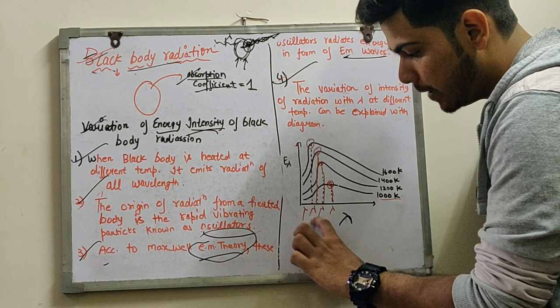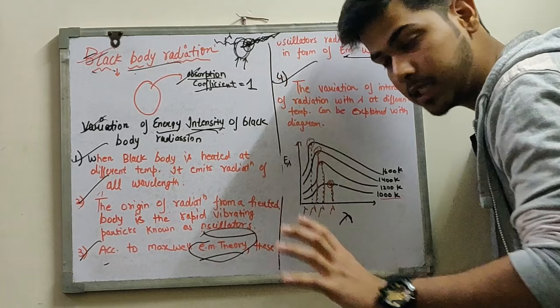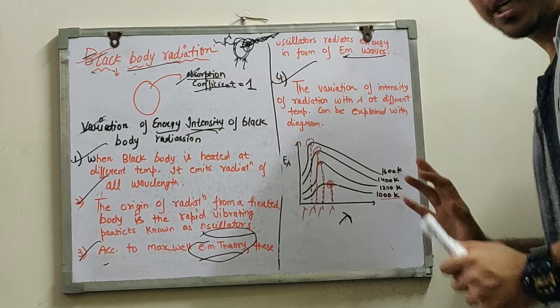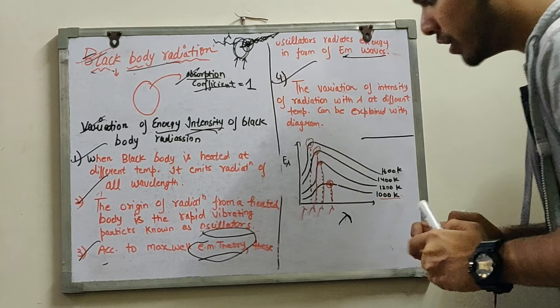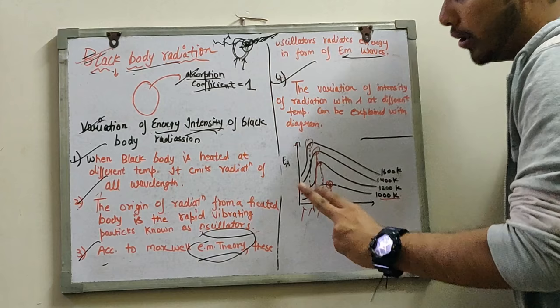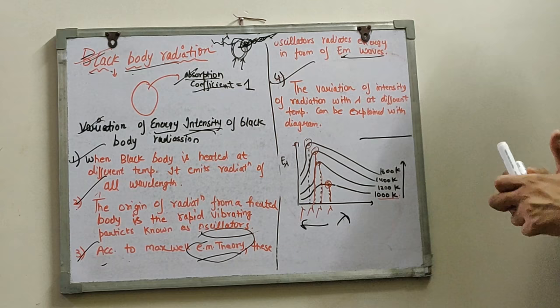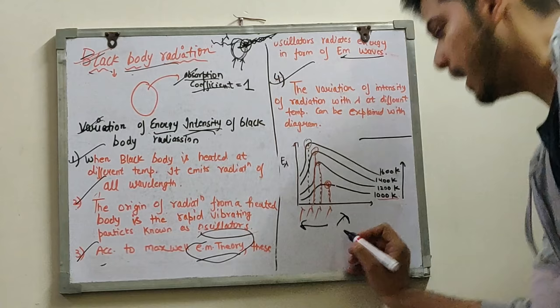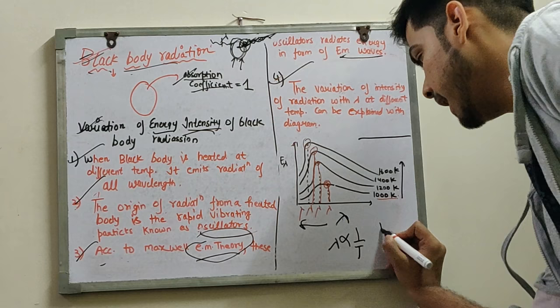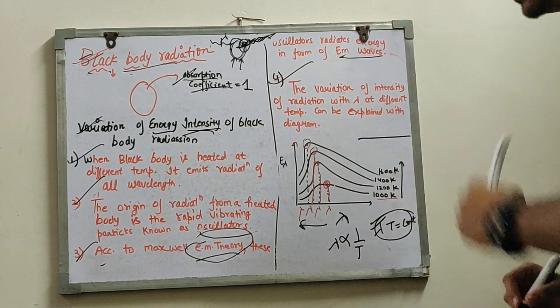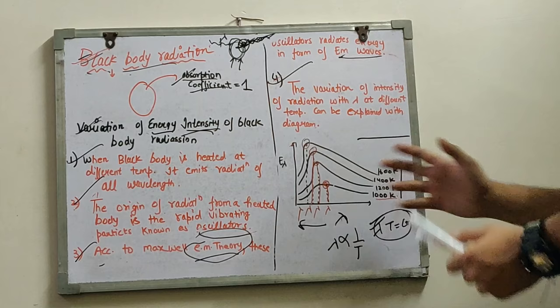When we get the maximum value of energy at a particular lambda and we increase the temperature, we observe that the lambda at which maximum energy occurs is shifting. We have seen that energy peaks at particular points. When the temperature is increasing, the lambda is decreasing — so lambda is inversely proportional to temperature. Lambda T equals a constant. We will now see the postulate based on these conclusions.